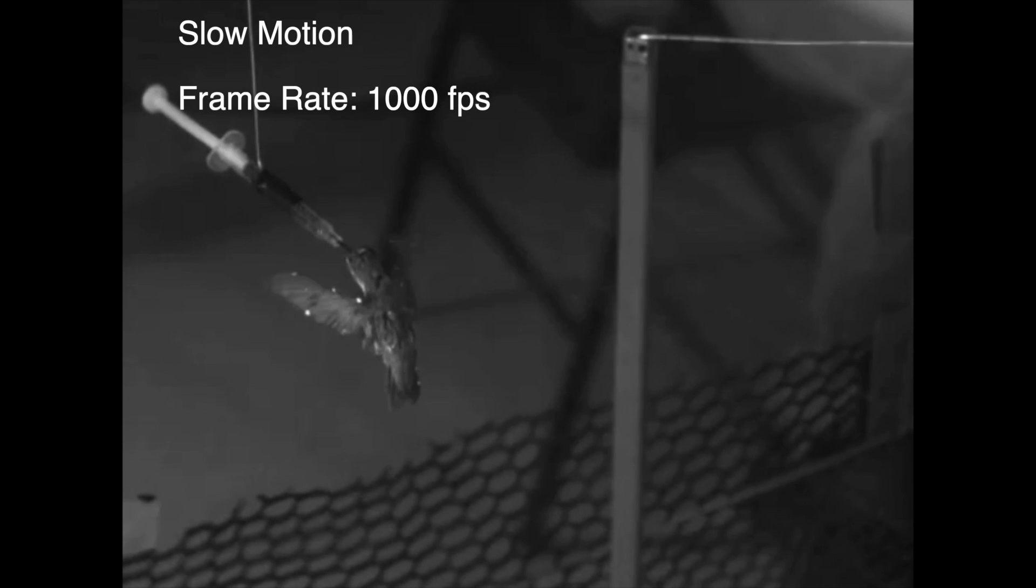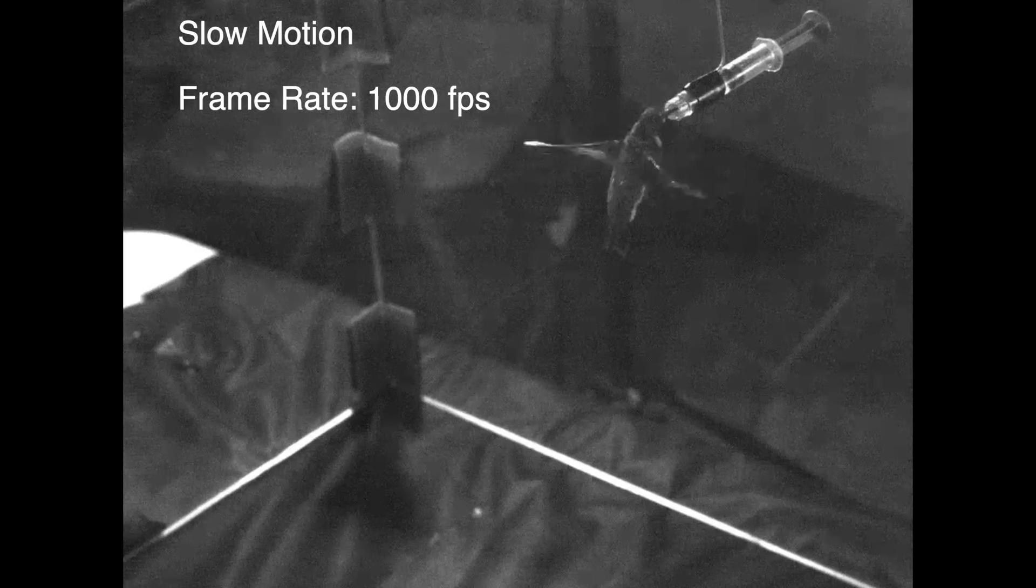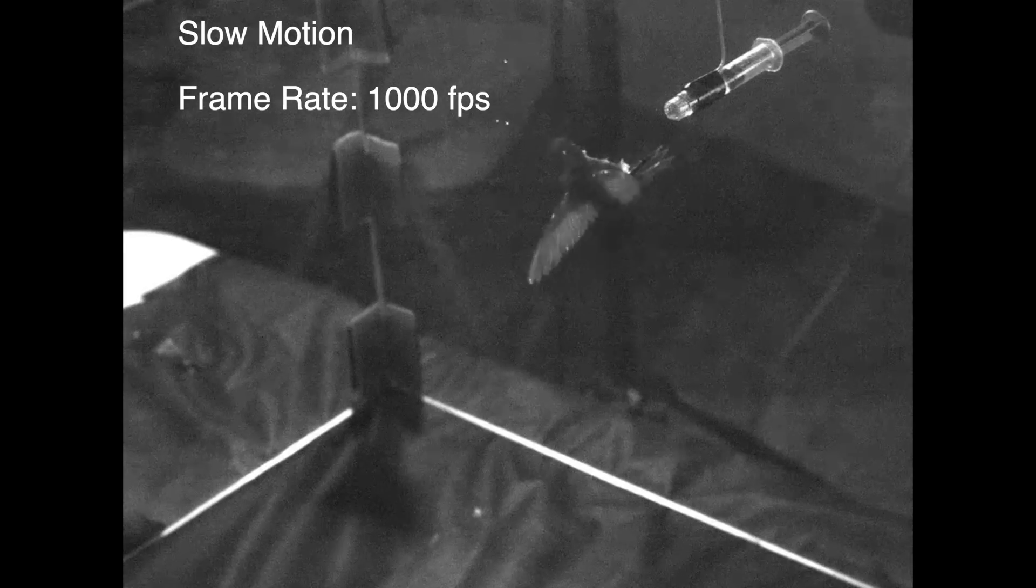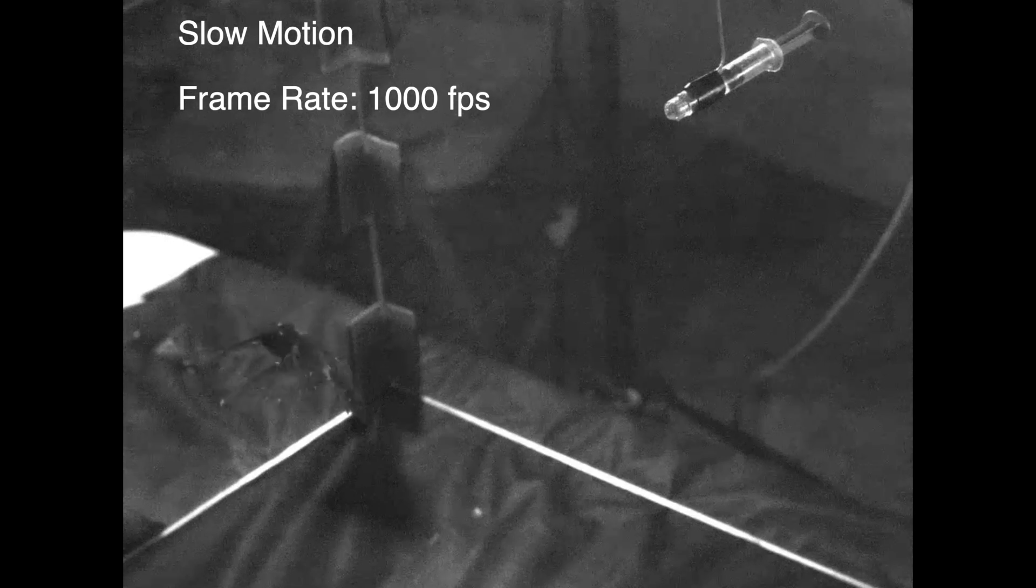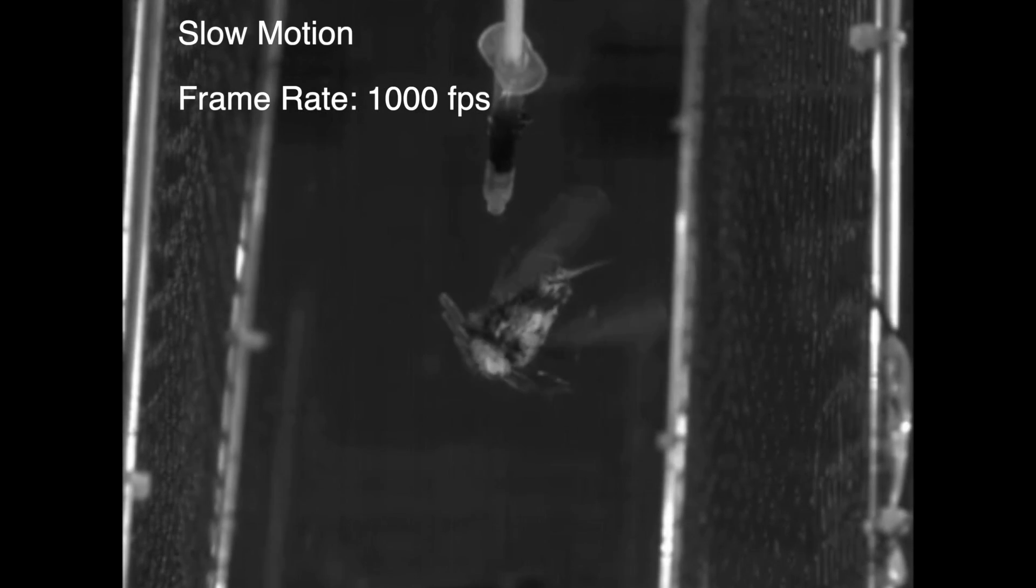Hummingbirds can perform a stereotypical multi-axis escape maneuver when given a visual stimulus. This near-maximal maneuver takes four and a half times the power required for hovering. To further push the flight performance boundary of man-made flapping wing vehicles, we used this extreme maneuver as a benchmark to test the performance of our robot.